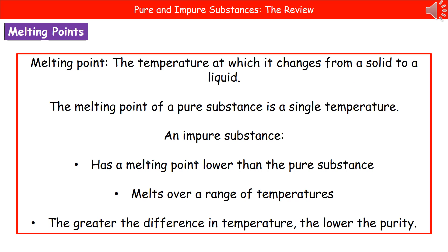When we want to determine how pure a substance is, one key method is using the melting point — the temperature at which a substance changes from its solid state to its liquid state. If we have a pure substance, made of just a single element or compound, then that melting point is a single, precise temperature.